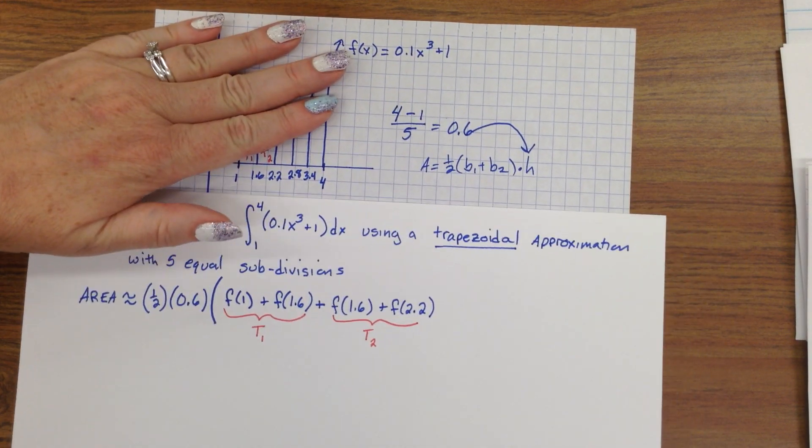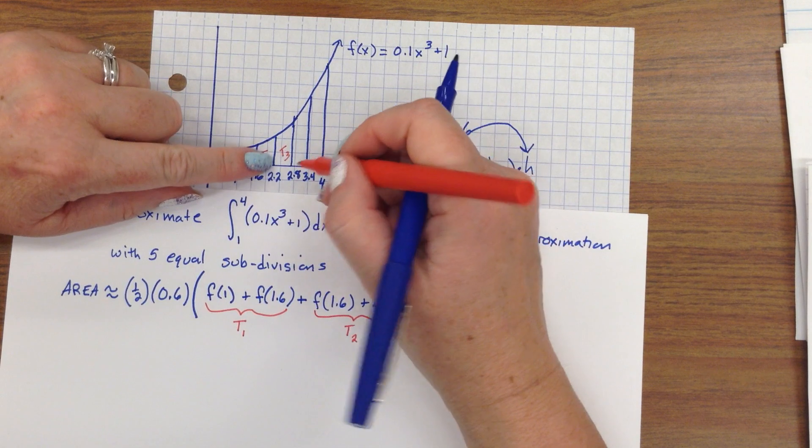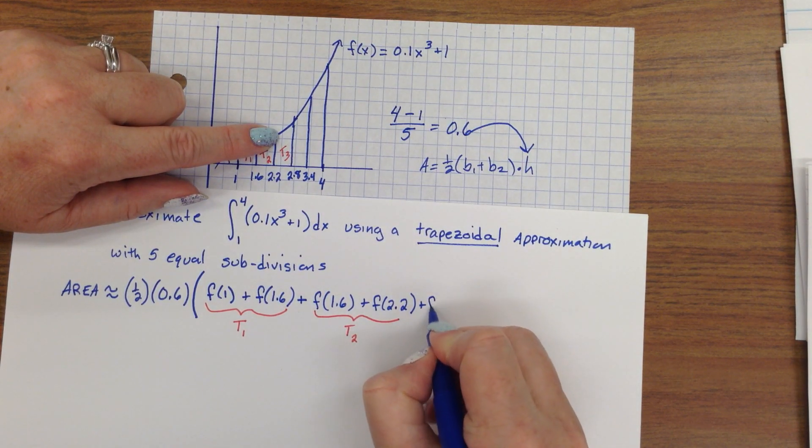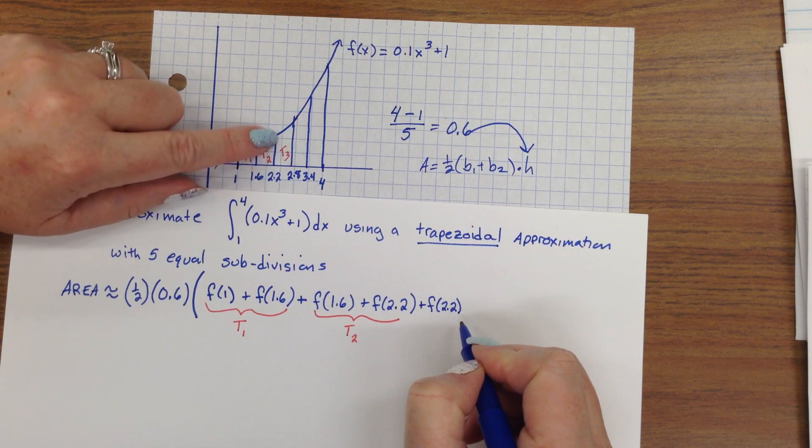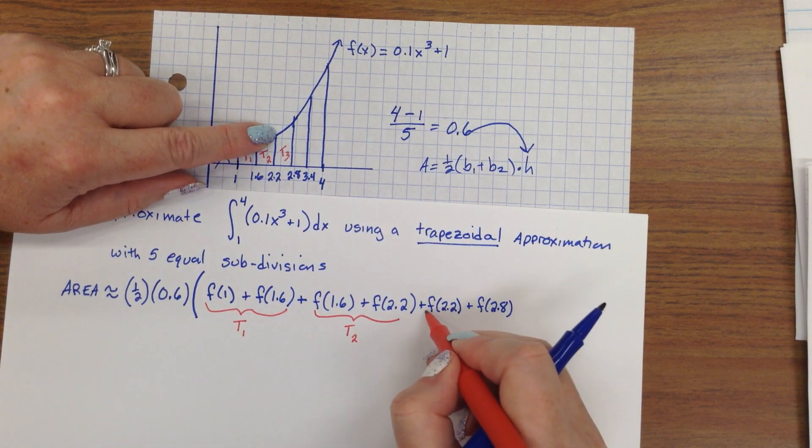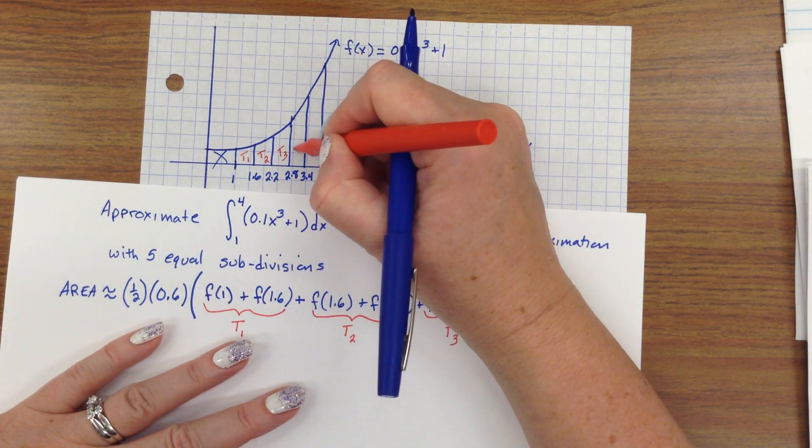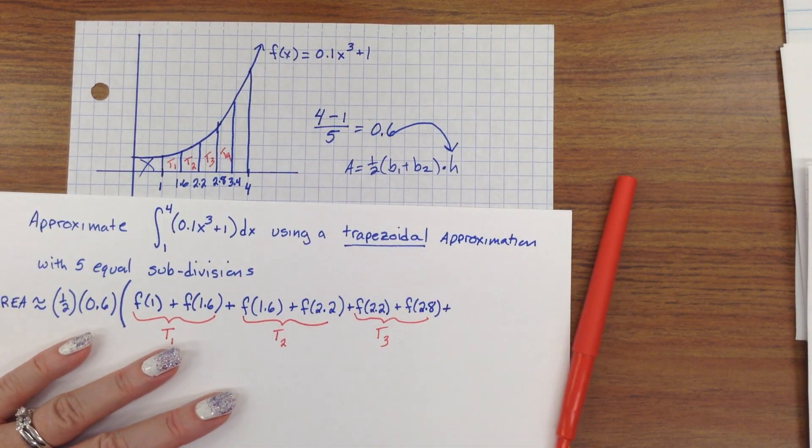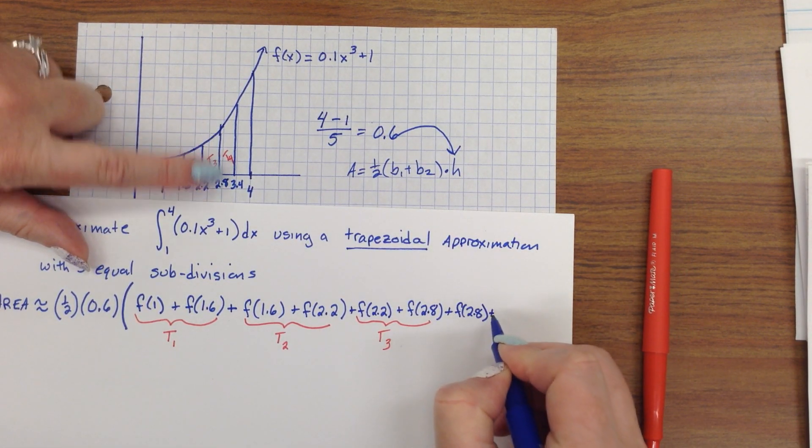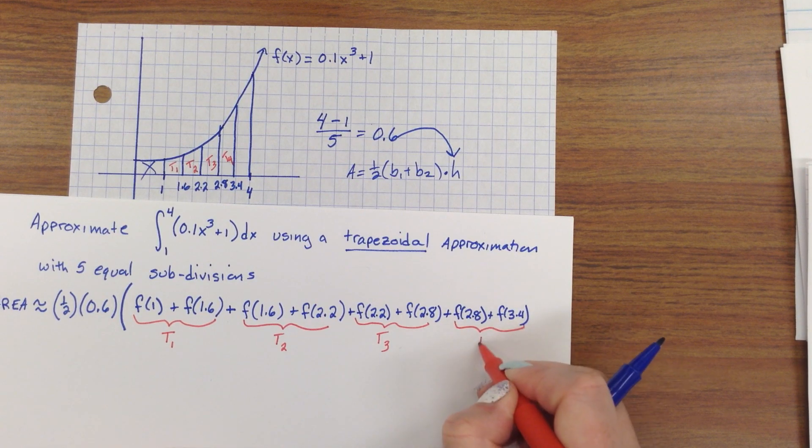I'm going to keep going. Then, trapezoid number 3. Trapezoid number 3 has the bases at an x-coordinate of 2.2 and an x-coordinate of 2.8. So, I will take 2.2 and fill it into the function to get the height, the y-coordinate. I will take 2.8 and fill it into the function to get the y-coordinate. That's trapezoid 3's bases. Keep going. We have trapezoid 4. For trapezoid 4, it's the height of the function at 2.8 and the height of the function at 3.4. Oh, man, I'm going to run out of paper. That's our fourth trapezoid.